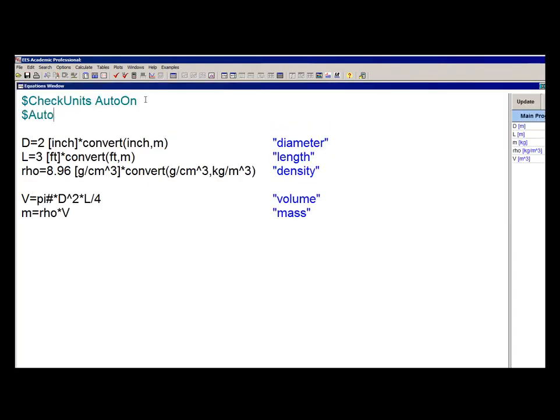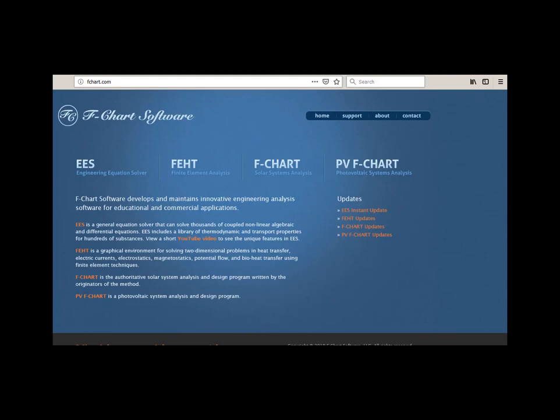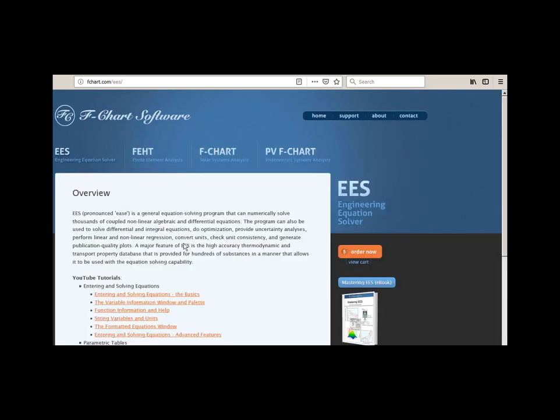You can turn this automatic units checking on and off by using the directive dollar auto set units on at the top of your EES equations window as I've done here. So this is one of a series of tutorials that is meant to describe the operation of the EES software. If you'd like to get more information about EES, if you'd like to obtain the software or access more of these tutorials, please go to the website fchart.com.